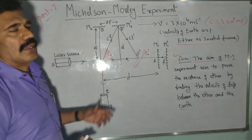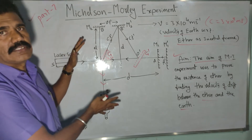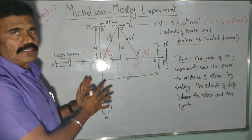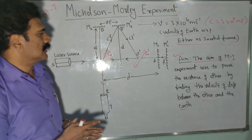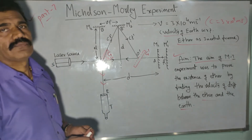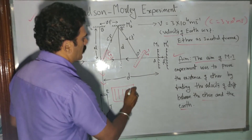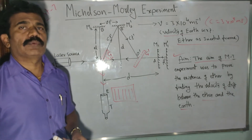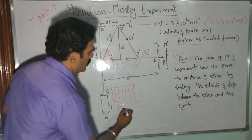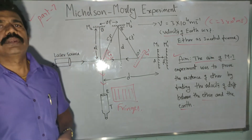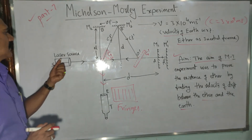Now let us see what changes occur when the experiment is conducted in two different directions. This is basically an optical experiment where we observe the formation of fringes — alternate bright and dark fringes formed when monochromatic light waves superpose each other, producing interference fringes. To get that kind of fringes, we have a specific experimental arrangement.